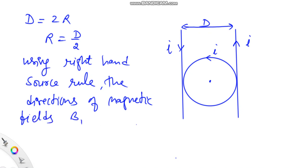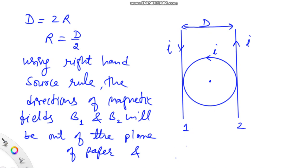The magnetic fields B1 due to first conductor and B2 due to the second conductor will both be outward, out of the plane of paper.